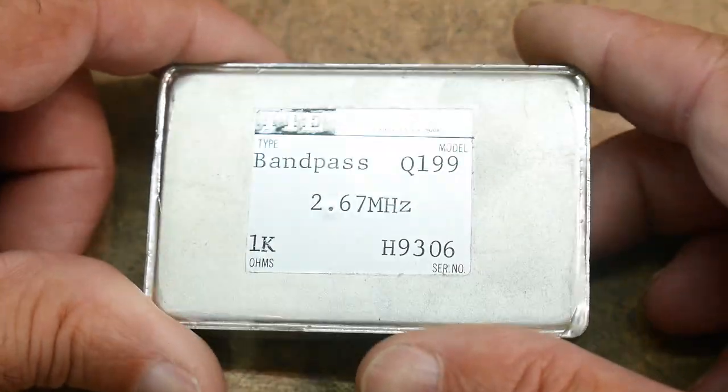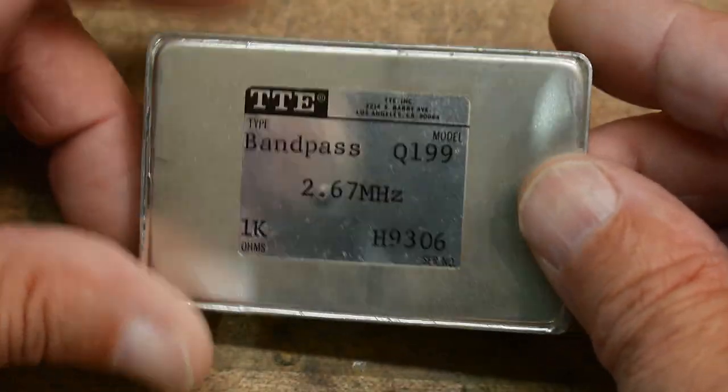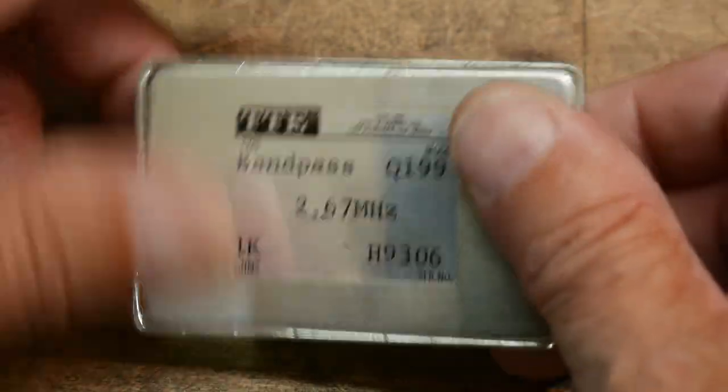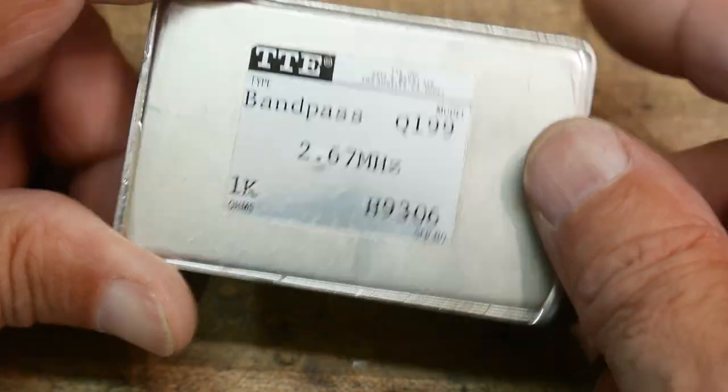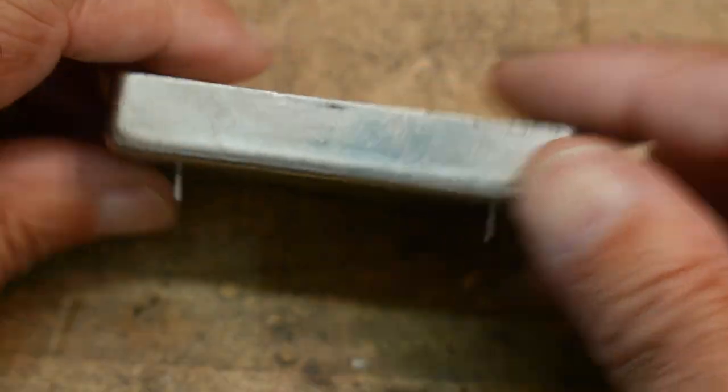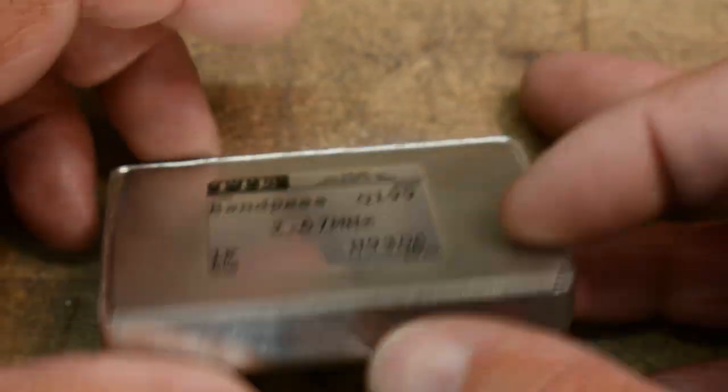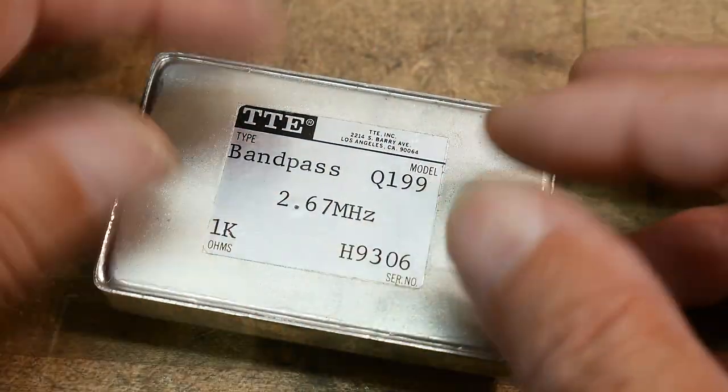Alright, I went to the junk store and I found a bandpass filter. I hadn't seen these before. It was two dollars and fifty cents, which is cheap. It's something big and old that we can open up and learn from.